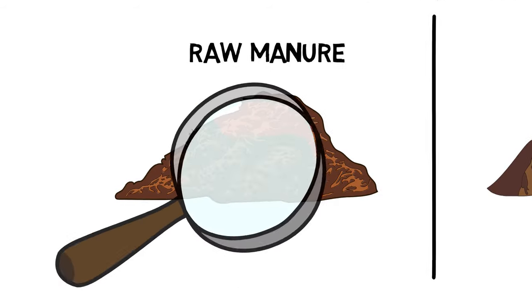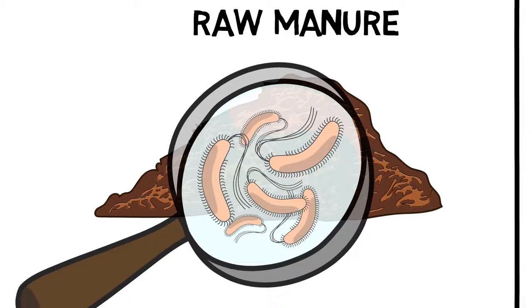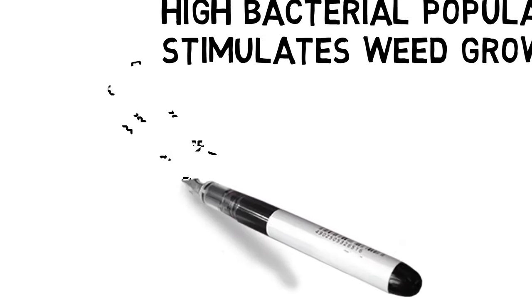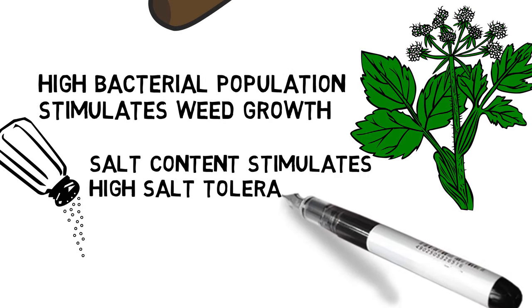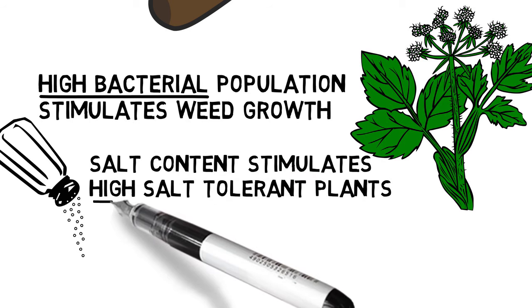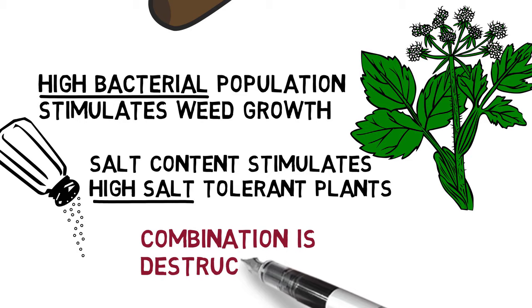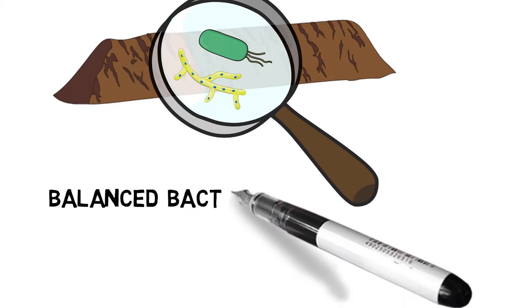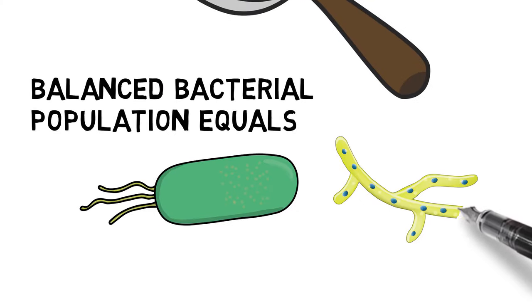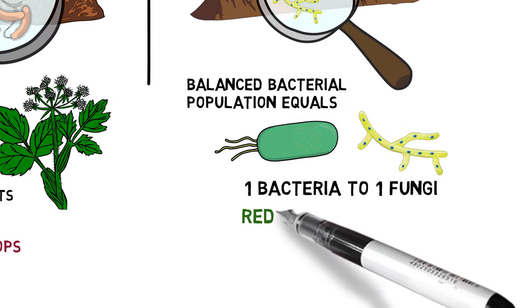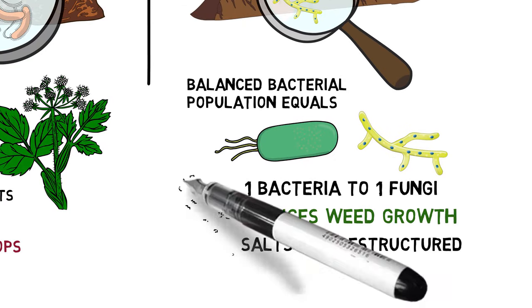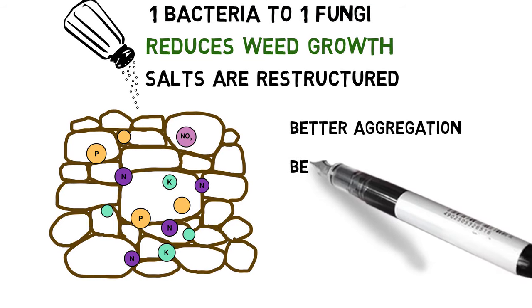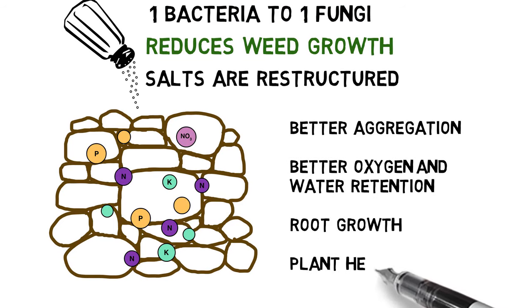Raw manure is extremely high in bacterial populations. When added to soils, high bacterial populations stimulate weed growth, and the salt contents stimulate high-salt-tolerant plants — the combination of which is destructive to the crops we want to grow. Composted manure with a balanced bacterial population — approximately equal bacteria to equal amounts of fungi — reduces the environment that encourages weed growth. The salts are restructured and the beneficial microorganisms set up the soil structure for better aggregation, oxygen, water retention, root growth, and plant health.